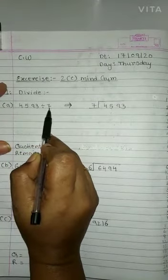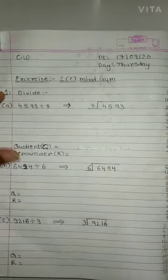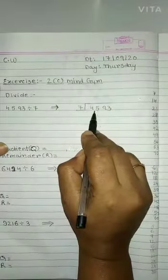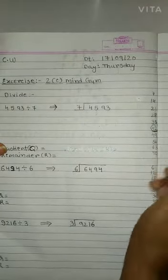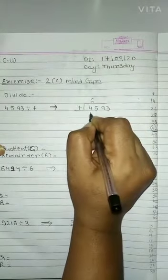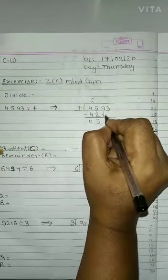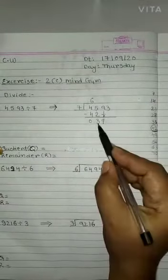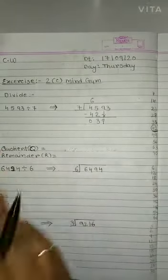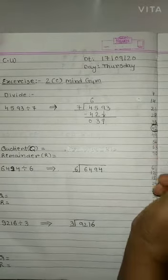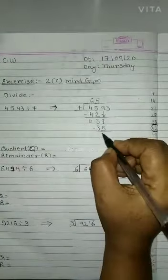4,593 divided by 7. अब 7 क्या है? Divisor। और 4,593 क्या है? Dividend। अब हमने लिख लिया 7 का table यहाँ पर। अब 7 के table में 45 आता है, 45 या 45 से छोटा कोई number जो 45 के एकदम करीब हो — तो ये है 42। 7 times 6 = 42। अब 45 में से 42 minus करेंगे, हो जाएगा 3। अब सबसे पहले उतारेंगे 9 को नीचे। 7 के table में 39 से छोटा पर 39 के एकदम करीब का number है 35 — 7 times 5 = 35।